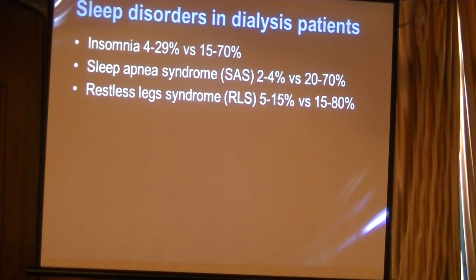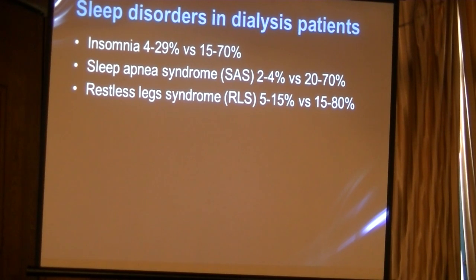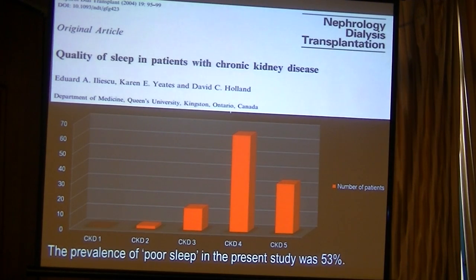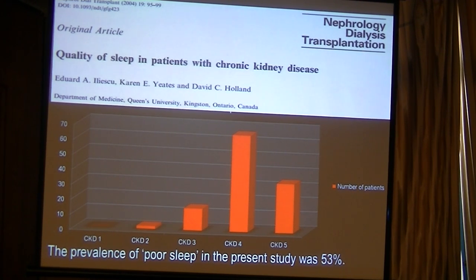Some types of sleep disorders: insomnia occurs in 4–25% of the normal population and 15–70% in the hemodialysis population. Sleep apnea syndrome occurs in 20–70%, and restless leg syndrome in 15–80% in the hemodialysis population. Only limited studies have been done on CKD patients in stages 1 to 4.